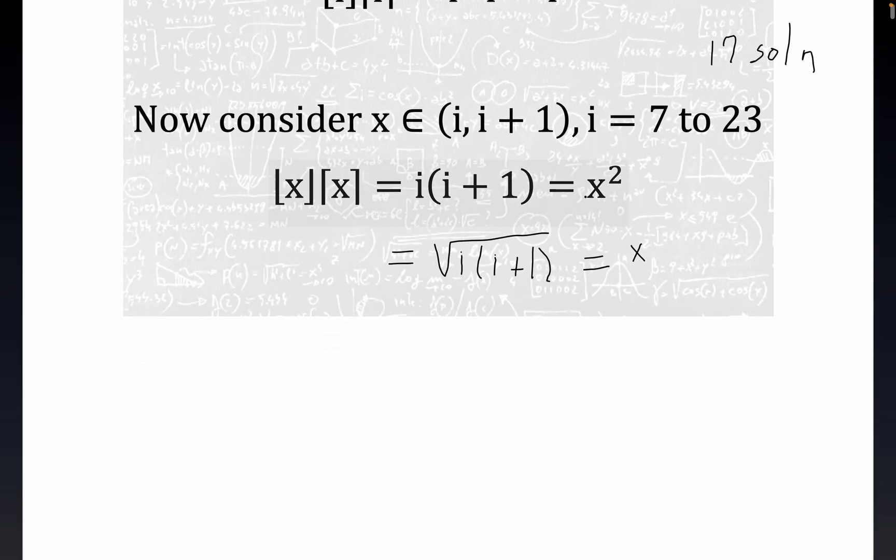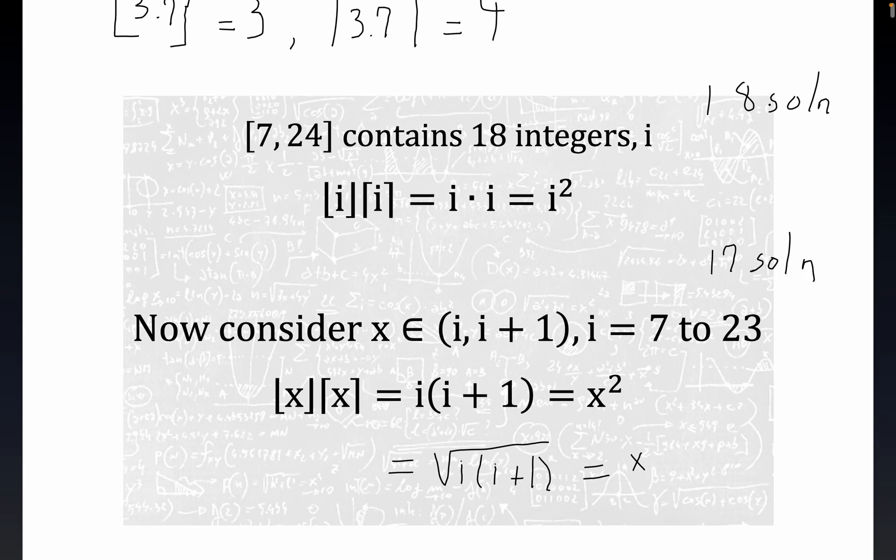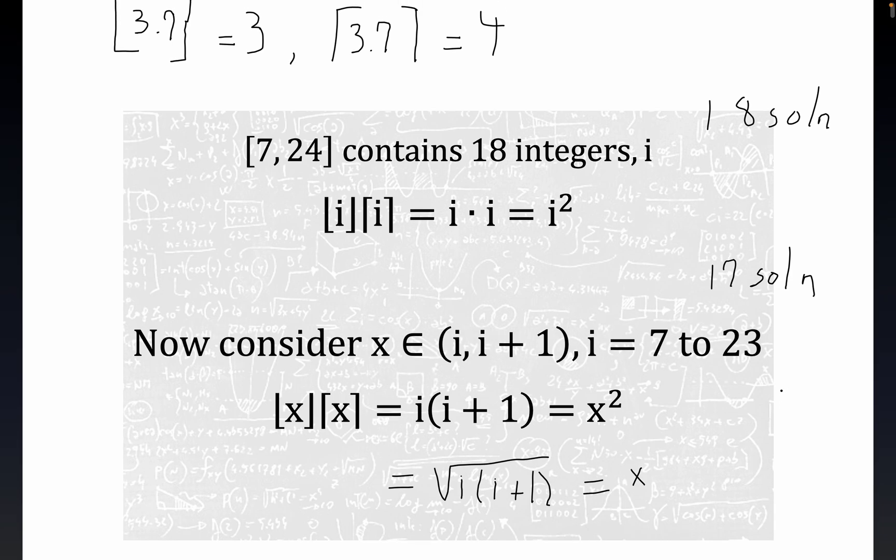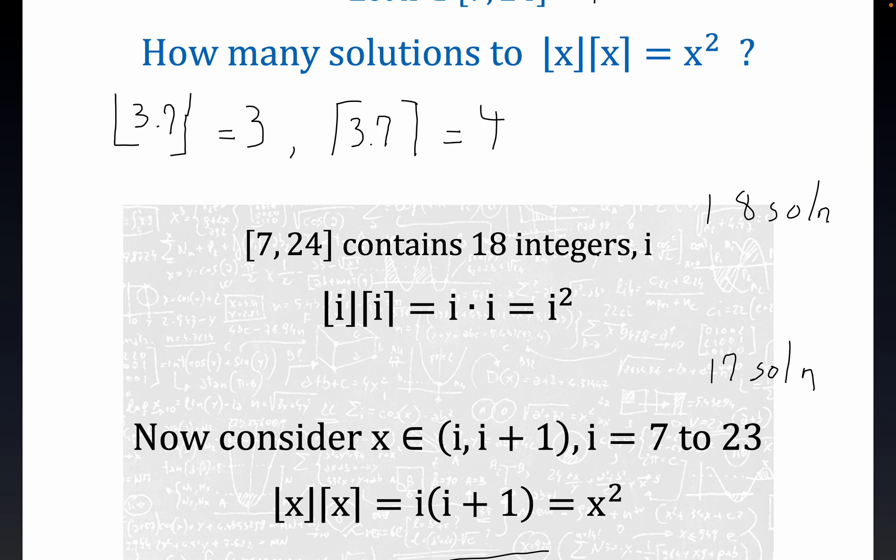So what we have here is 18 solutions when x is a real number that is an integer, and we have 17 solutions when x is a real number that's not an integer. And those two disjoint conditions combine to give the total number of solutions to be 18 plus 17.